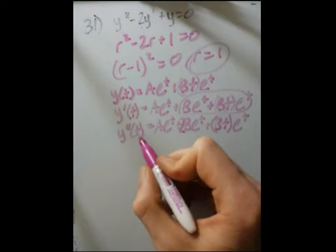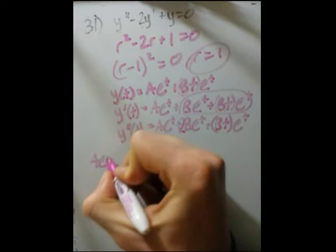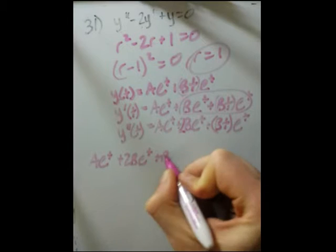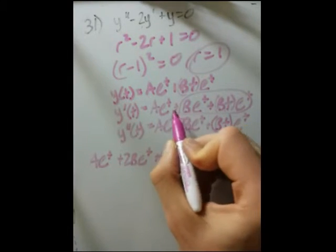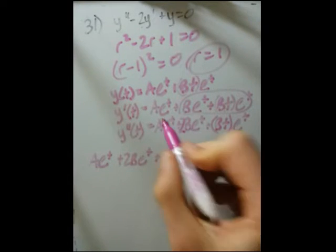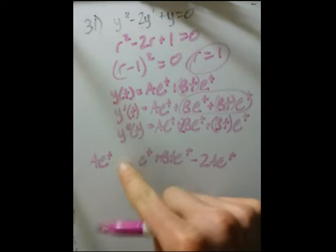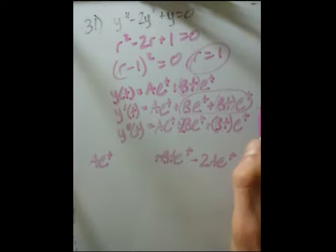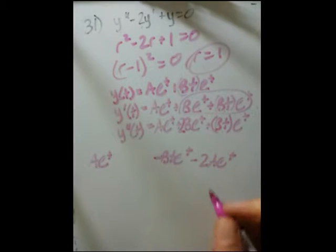So plugging this in, we take a single y double prime: a e to the t, plus 2 b e to the t, plus b t e to the t. Now we subtract 2 y primes, so we can see that we're going to have minus 2 a e to the t, minus 2 b e to the t. So that cancels this one, minus 2 b t e to the t.